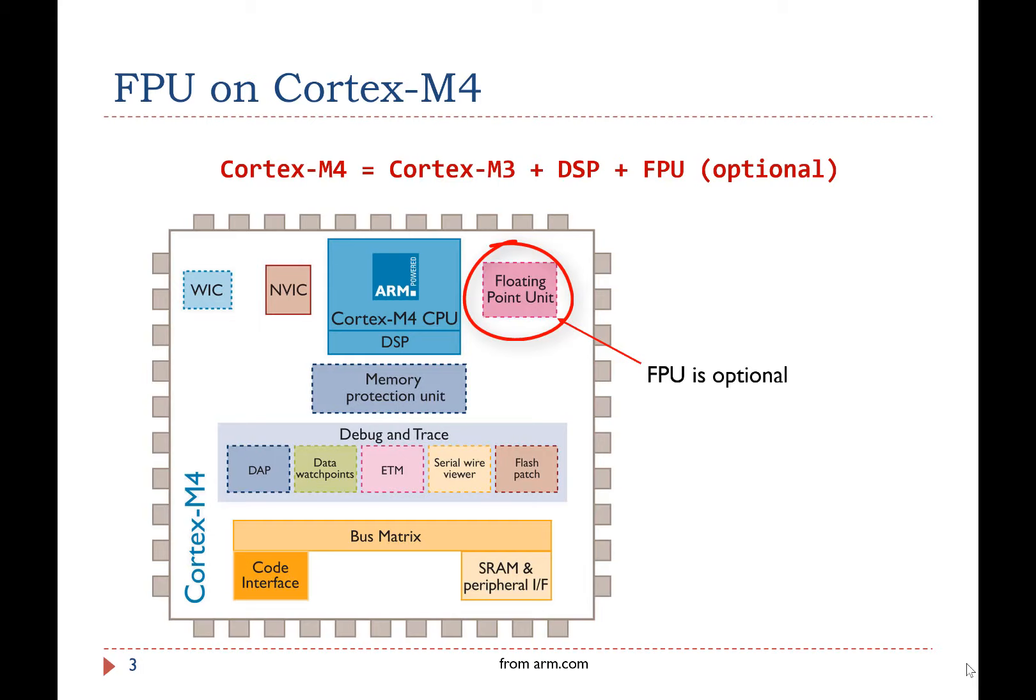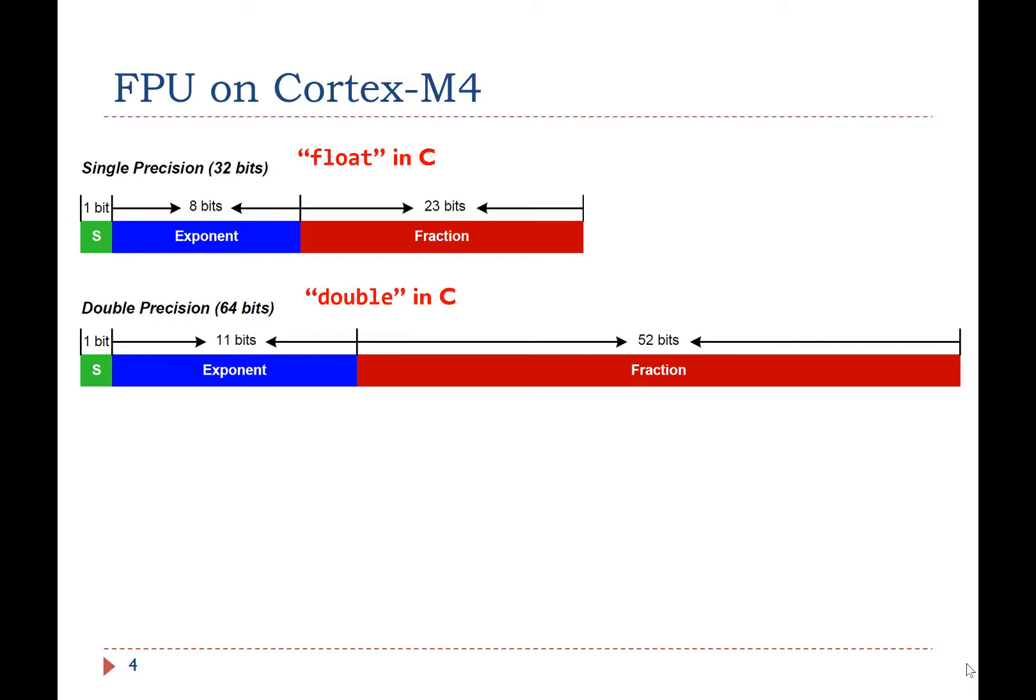A floating point number can be single precision, which is declared as float in C, or double precision, which is declared as double in C.